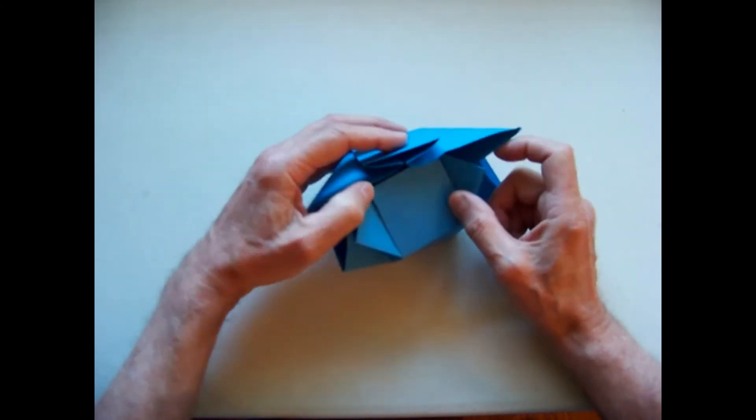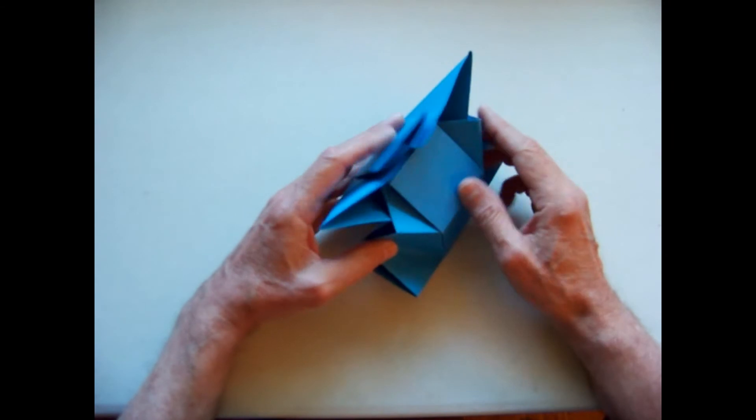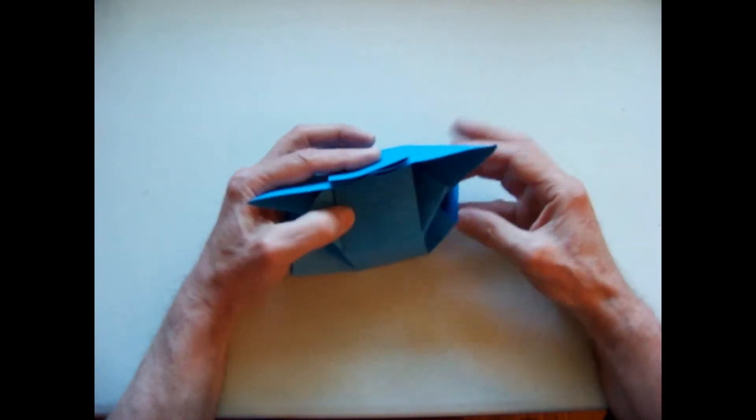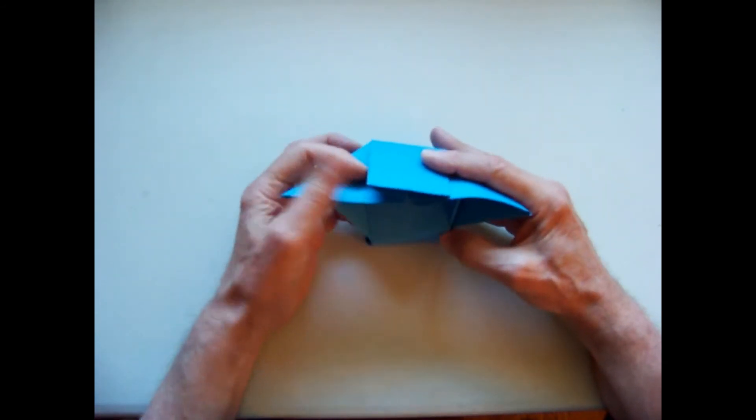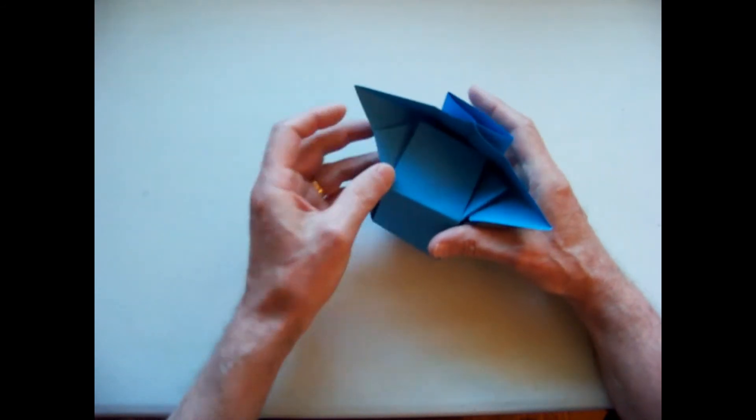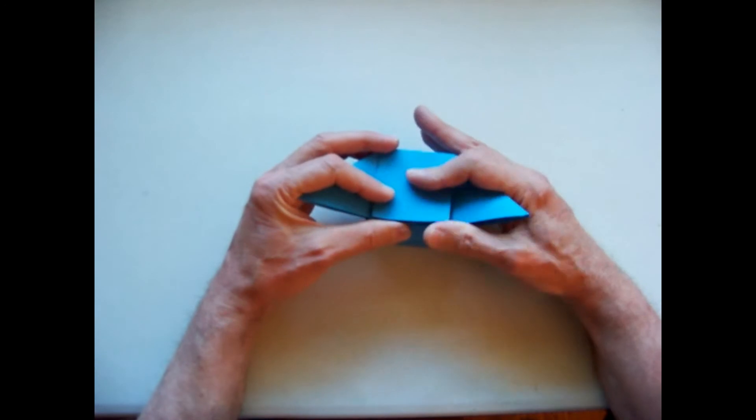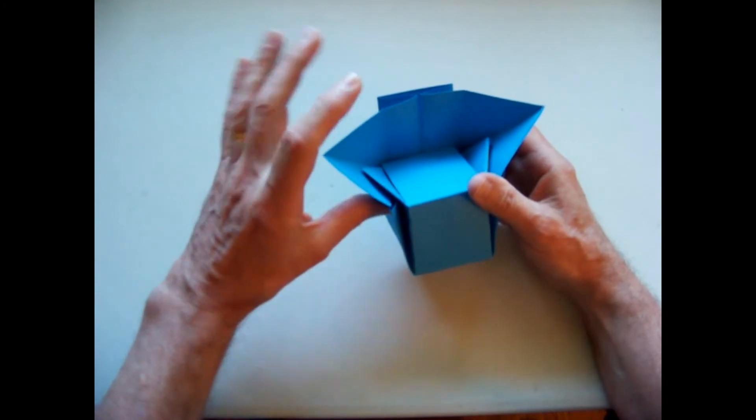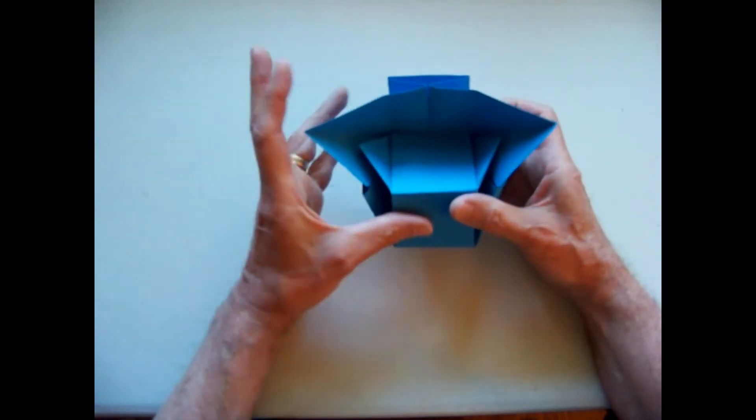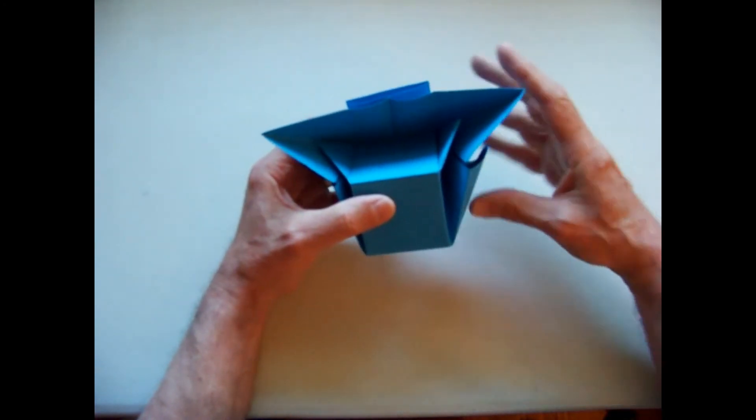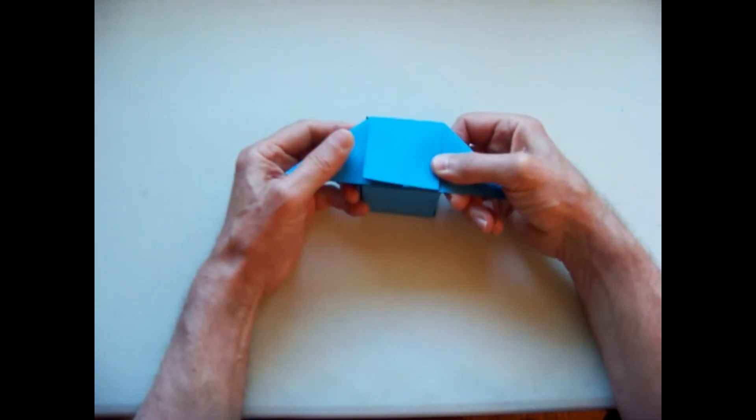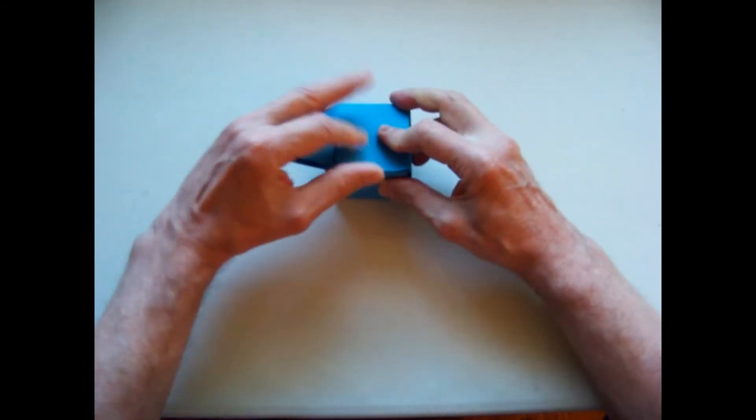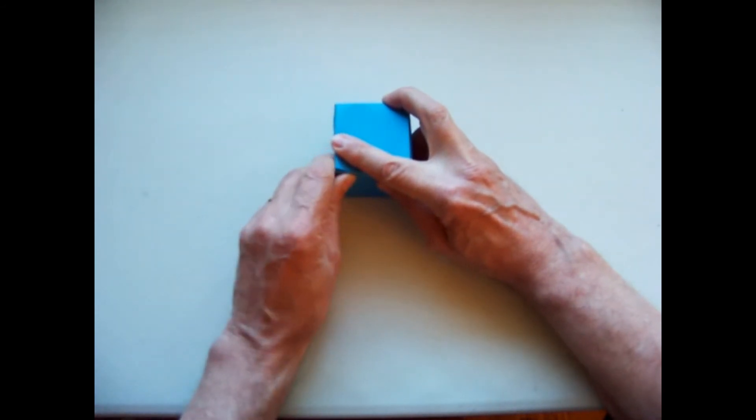Now we insert the small wings entirely inside the larger wings and we close the cube up. You might now want to bring the flap down to set that crease. Bring this flap down to set that crease.